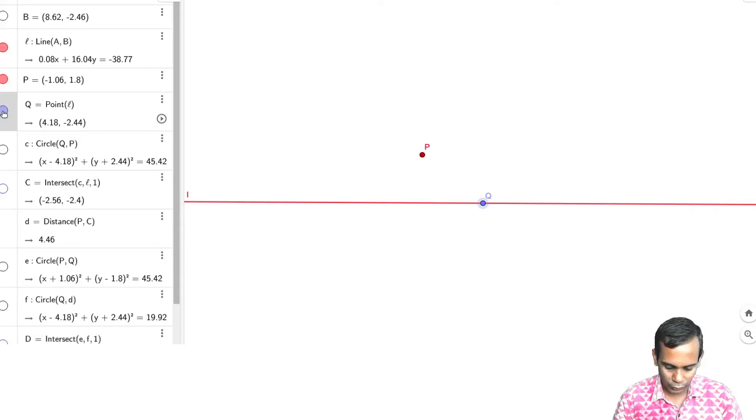So somehow construct a point on Q and then we can start our construction. So what you do is, the first step, you draw a circle with center at Q and passing through P.